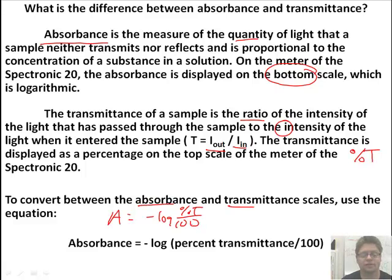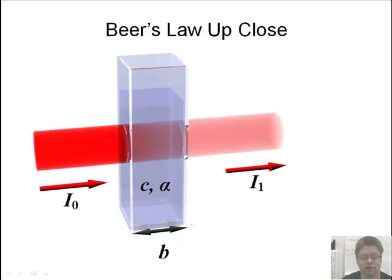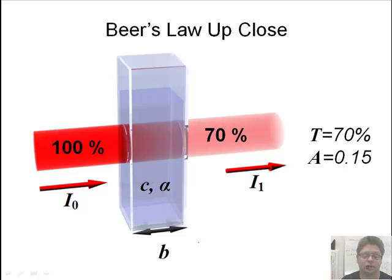So Beer's Law up close, you can see very clearly the light, much more energy, it's absorbed. You've got the concentration and the molarity factor, as well as the length of the cuvette or the sample length. You got 100% going in and only 70% going out. Transmittance is 70%, the absorbance is 0.15.